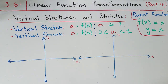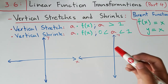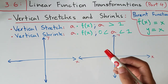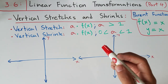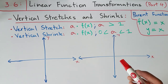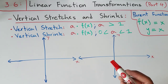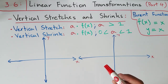Before explaining how vertical stretches and shrinks look on a coordinate plane, note that your a factor also equals your stretch factor. So for a vertical stretch, if your a factor is 1.5, then your stretch factor will also be 1.5. This is different from horizontal stretches and shrinks, where the stretch factor is the reciprocal of a.